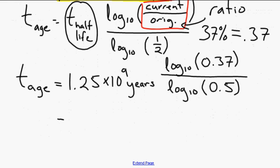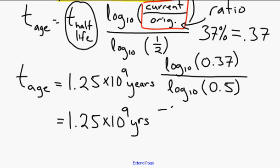I'm going to start out by calculating what these log values are. So I'm just going to rewrite this part: 1.25 times 10 to the 9 years. Now it turns out that log of 0.37 is negative 0.432, and log of 0.5 is negative 0.301.